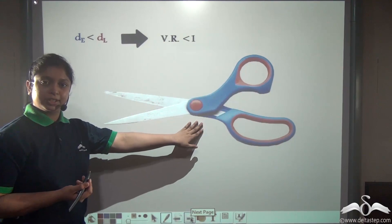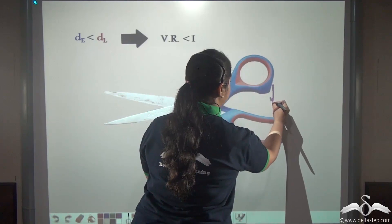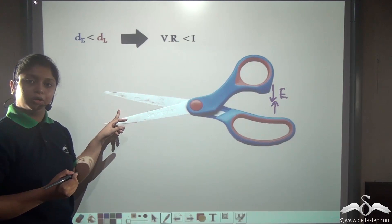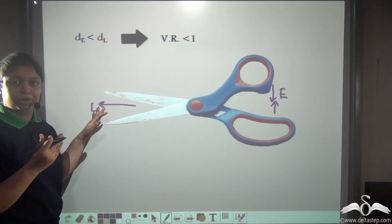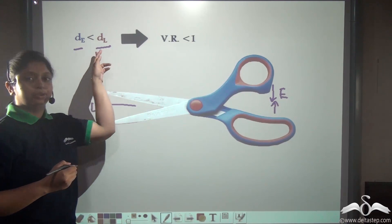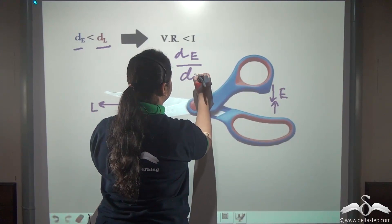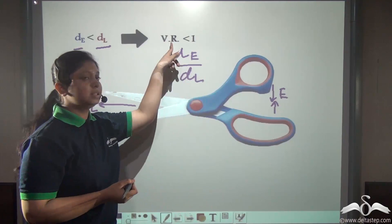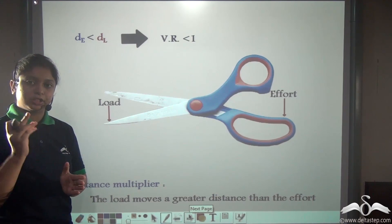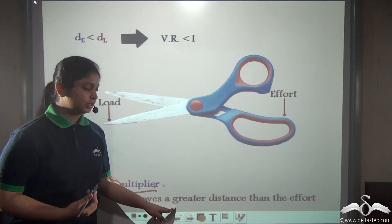Now see this scissor — this type of scissor is also a simple machine. Where do we apply effort? On the handles of the scissors, we apply a small effort on both handles. On doing so, the load moves a longer distance in the forward direction when cutting a paper or a cloth. So in machines like this, the load moves a larger distance than the effort — the distance moved by load is greater than effort. Therefore velocity ratio, which is DE by DL, is less than 1. We are moving the load a longer distance by moving the effort a smaller distance. So these types of machines are known as distance multipliers.